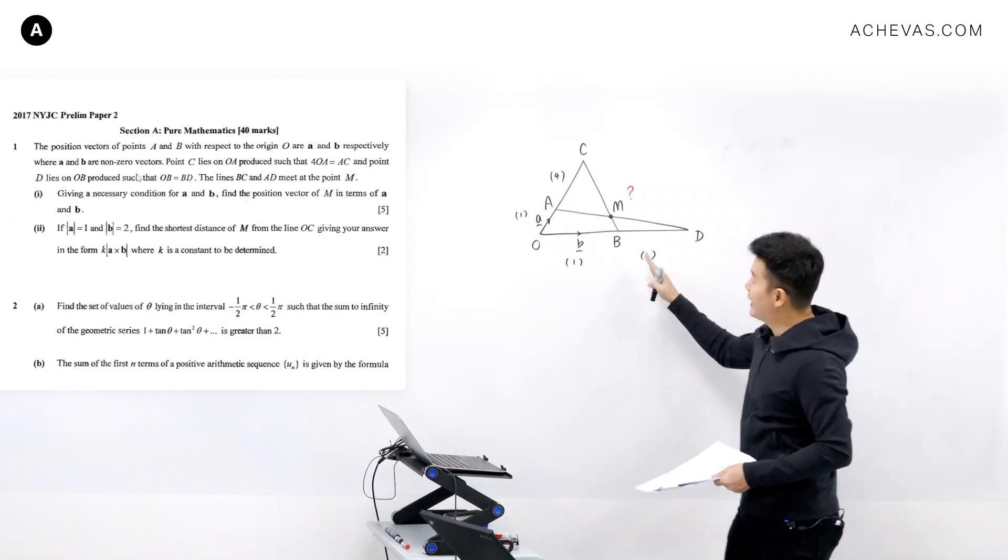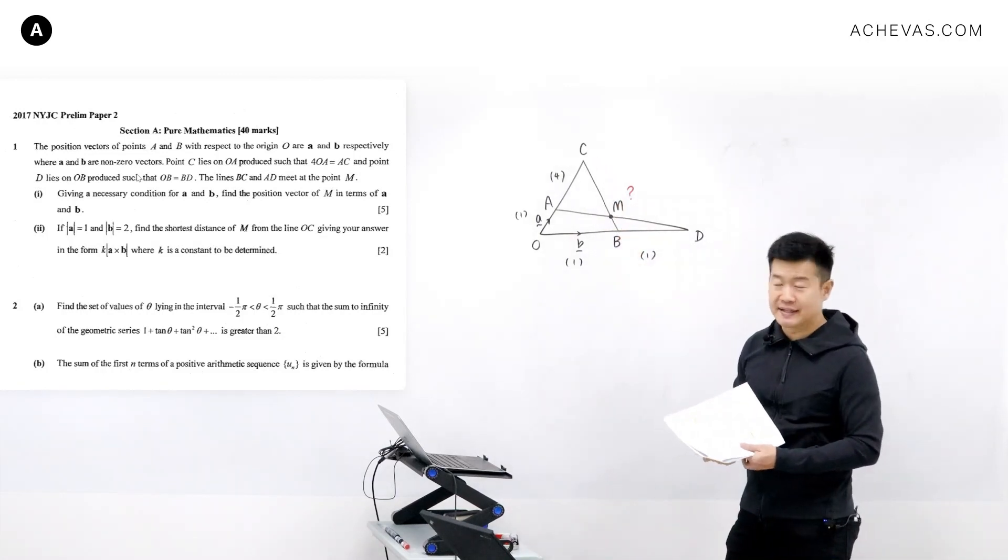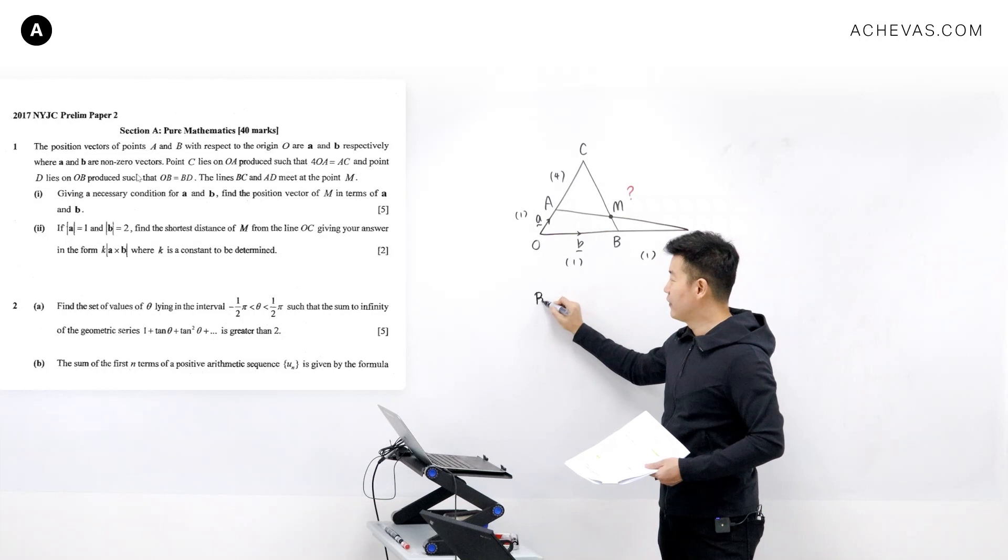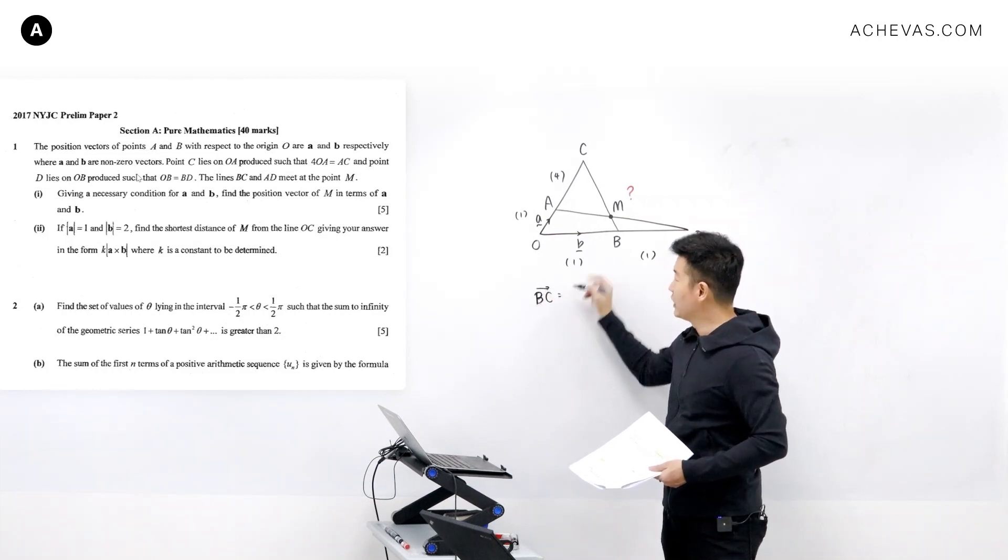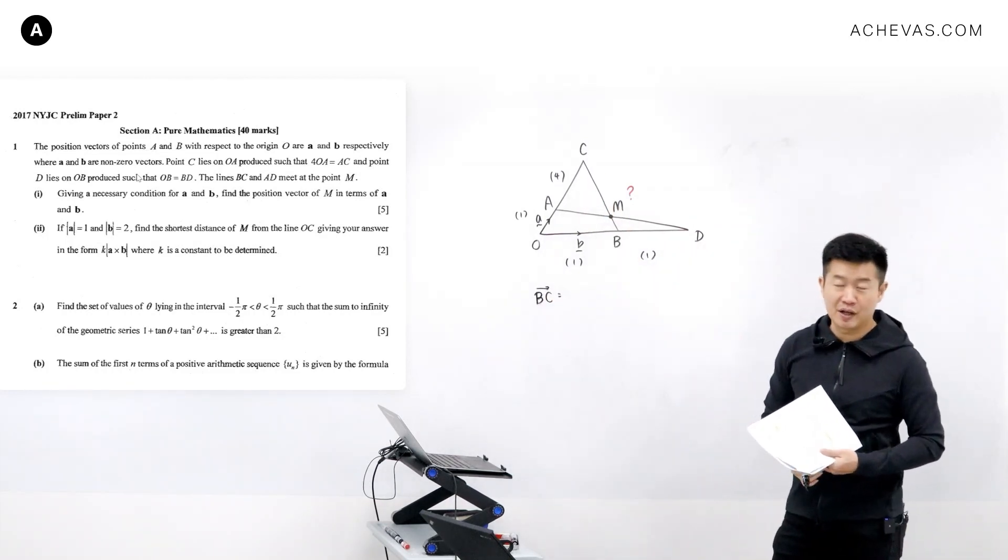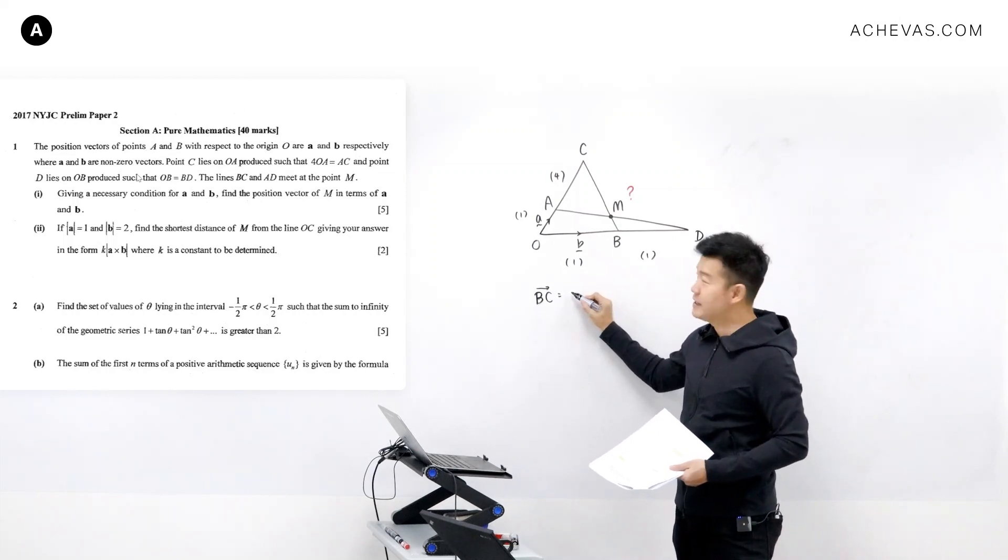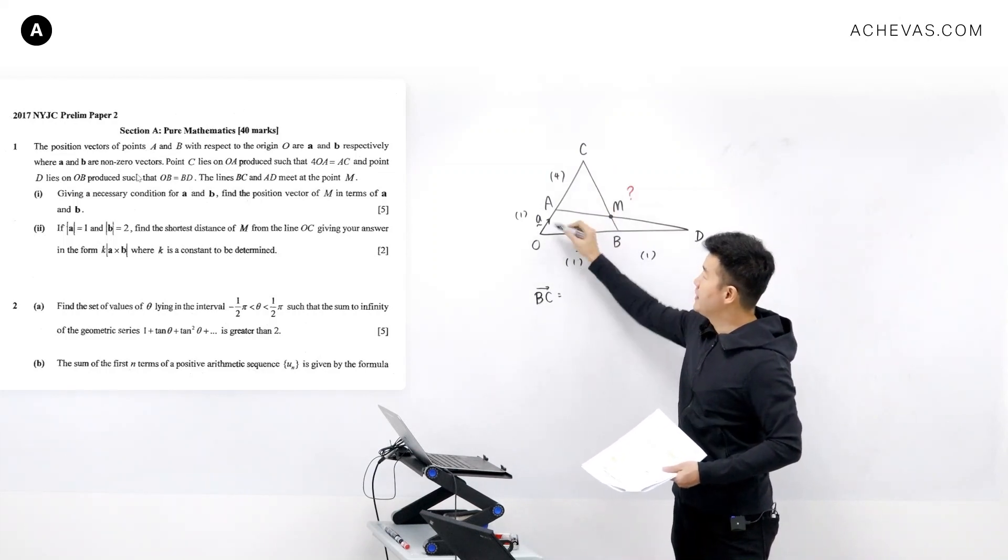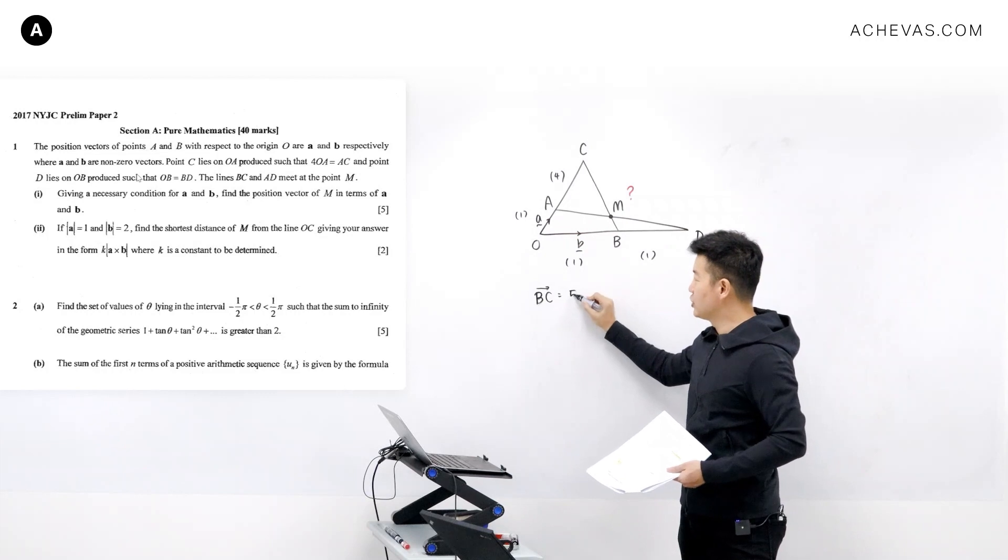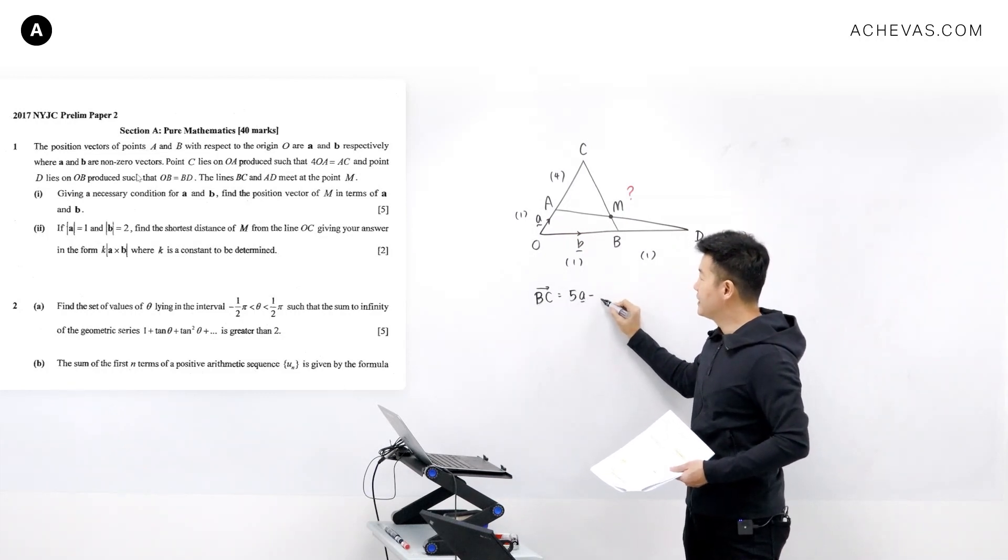So let's start by looking at the line that passes through BC. I'm going to first find vector BC which is going to give us a vector that is parallel to this line. So vector BC is going to be OC minus OB. OC is going to be 5 times of OA, so it's going to be 5a minus b.